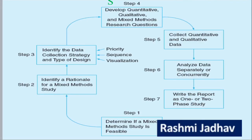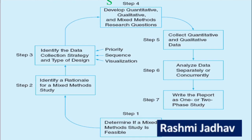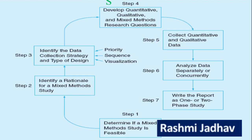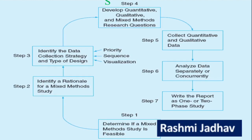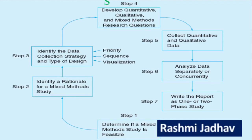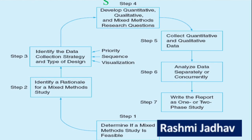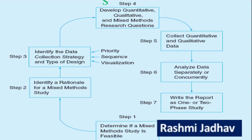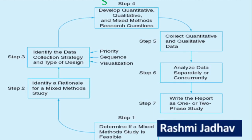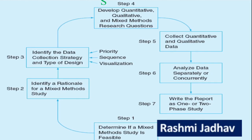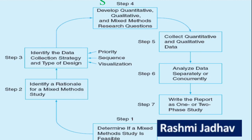Here are the general steps of mixed method designs. Step one: determine if a mixed method study is feasible. Step two: identify a rationale for a mixed method study. Step three: identify the data collection strategy and the type of design. Step four: develop quantitative, qualitative, and mixed method research questions. Step five: collect quantitative and qualitative data. Step six: analyze data separately and concurrently. Step seven: write the report as a one or two phase study.